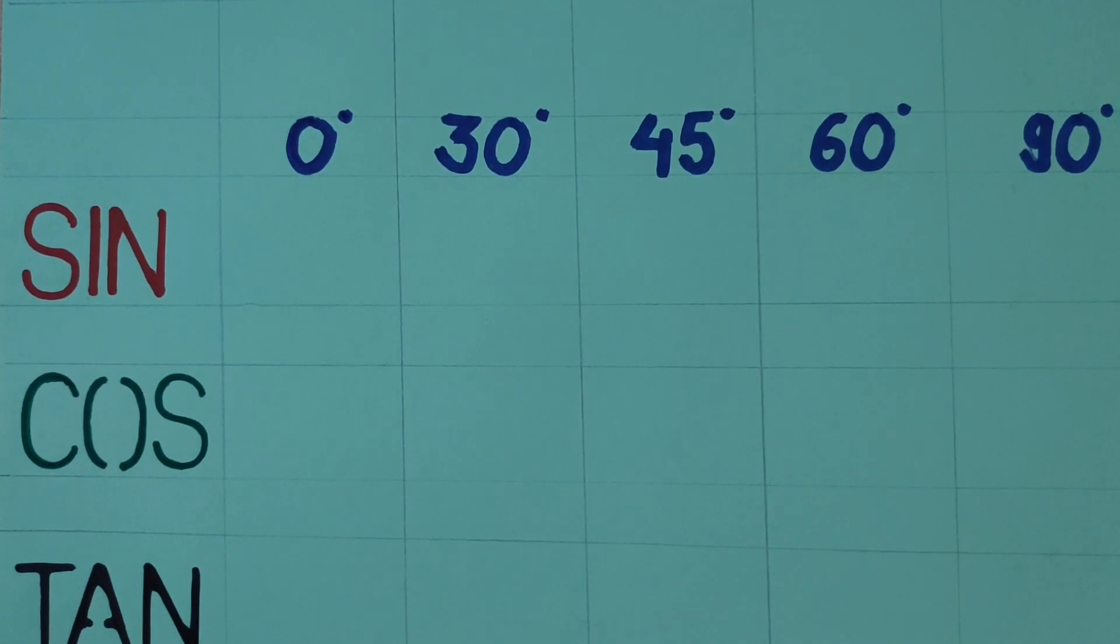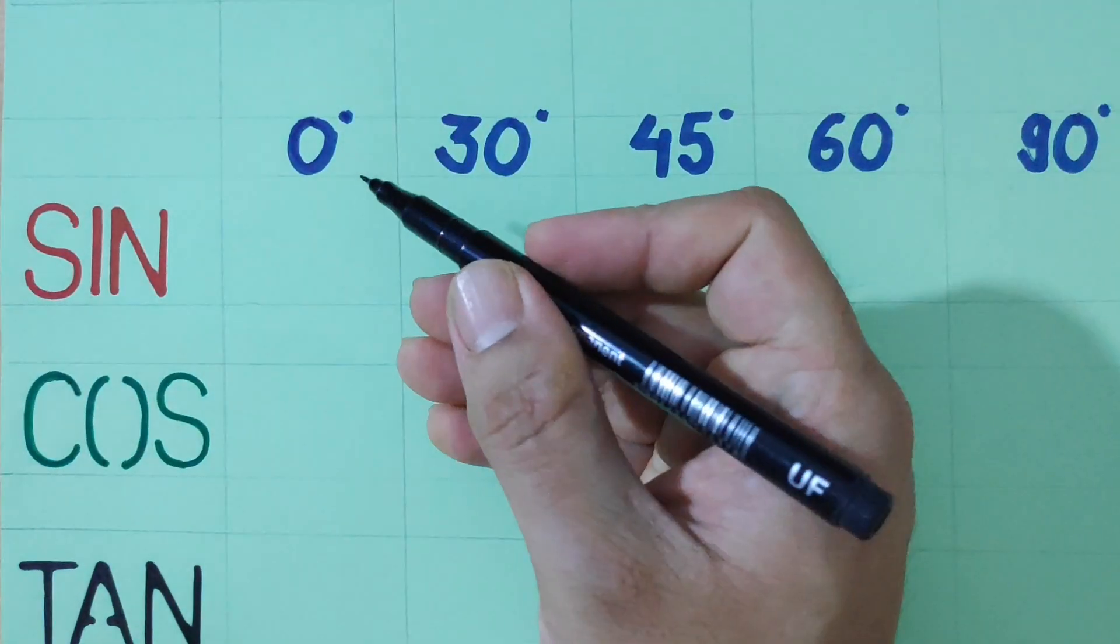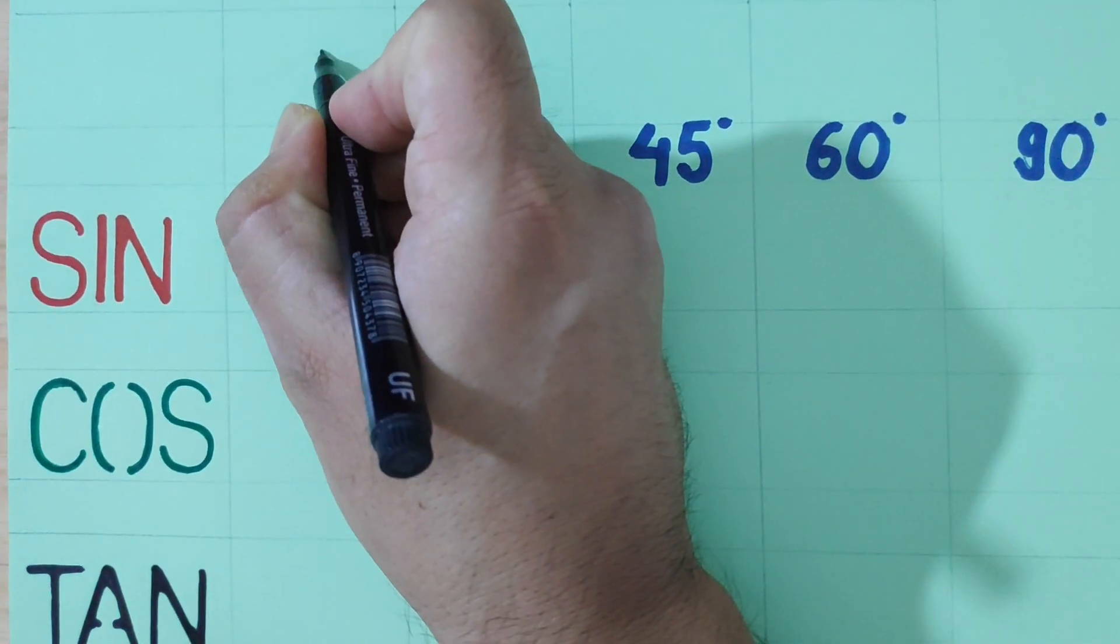How do we do this? How do we write it? This is 0 degrees. We write this.